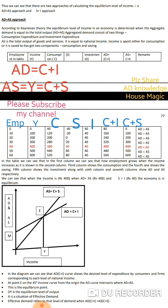When income increases from zero to 100, consumption increases from 40 to 120 — an increase of 80. Saving increases from minus 40 to minus 20, an increase of 20. At the second level of income (100), AD is greater than AS, meaning aggregate demand exceeds aggregate supply.